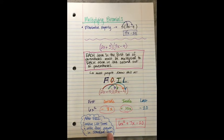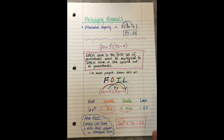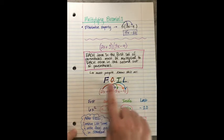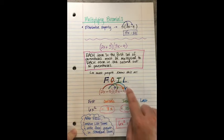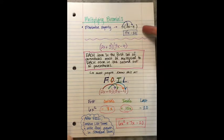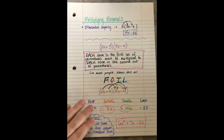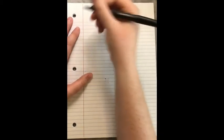Yes, this is in standard form — remember, standard form means highest degree, which is the highest exponent, down to lowest. So that's FOIL: First, Outside, Inside, Last. It's basically like extreme distributive property. We'll practice a little bit more.